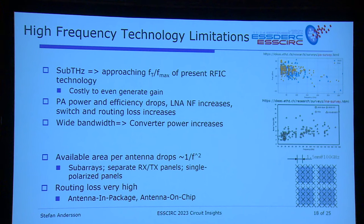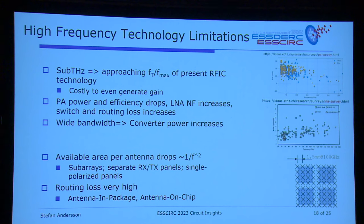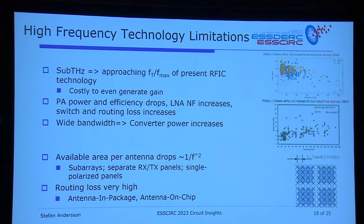At sub-terahertz frequencies, we're approaching F_T/F_max. It's costly to even generate gain. Power efficiency drops, noise figure increases, and all routing losses increase dramatically. Another constraint: at 100 GHz, there are about 1.5 millimeters between antenna elements, and that's the area where you need to fit the circuit. That's why we can't pick and choose between technologies — we have to make a compromise and fit the circuit behind the antenna.